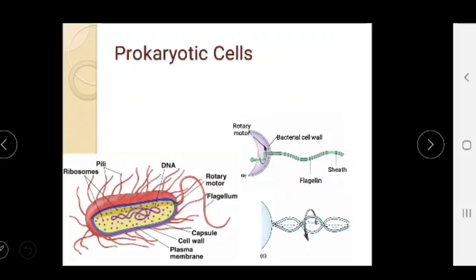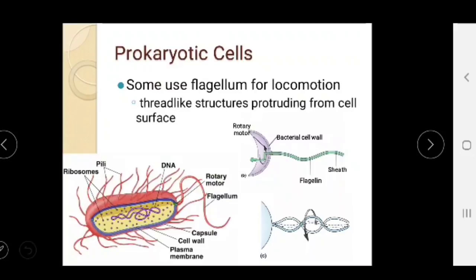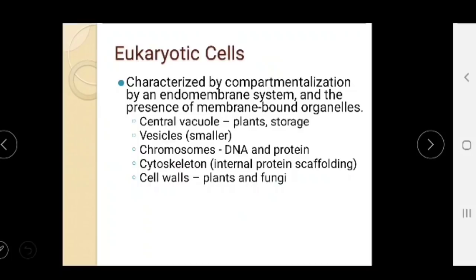In prokaryotic cells, the flagellum is the organelle used for locomotion. It is a thread-like structure protruding from the cell surface. Eukaryotic cells are characterized by compartmentalization through an endomembrane system and the presence of membrane-bound organelles. They contain central vacuoles, vesicles, chromosomes, cytoskeletons, and outer cell walls.